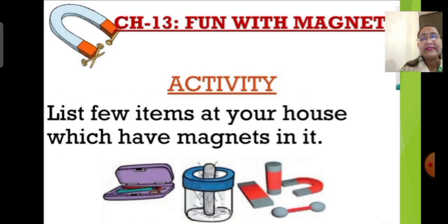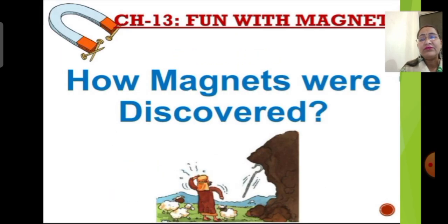Now, in your notebook, list a few items present at your house that have magnets in them. Next, we are moving on to the topic of how magnets were discovered — what is the story of magnets?